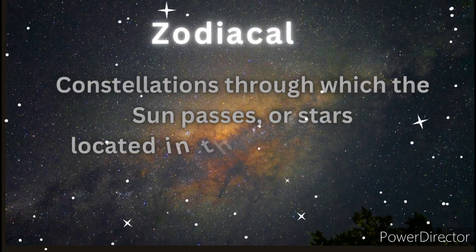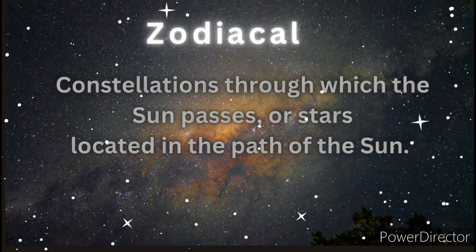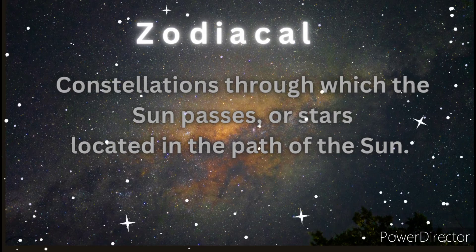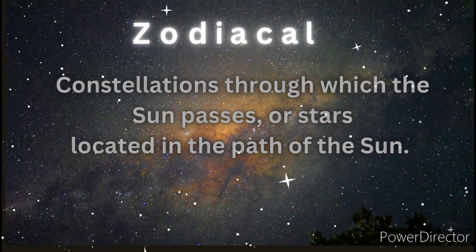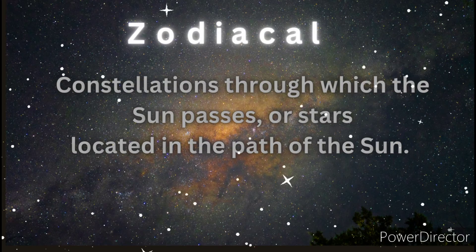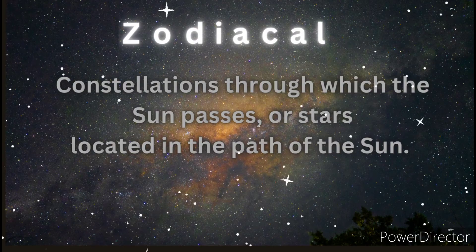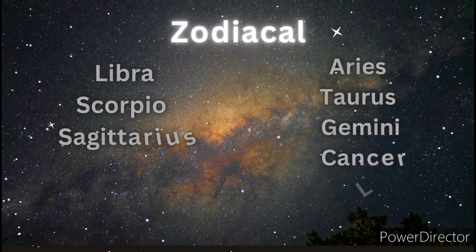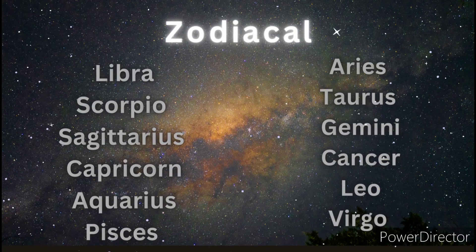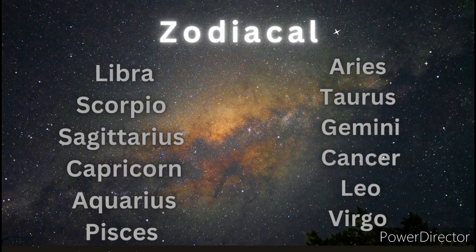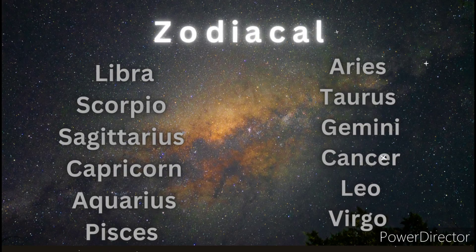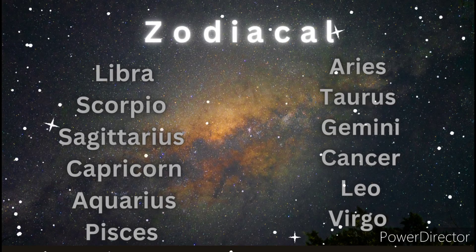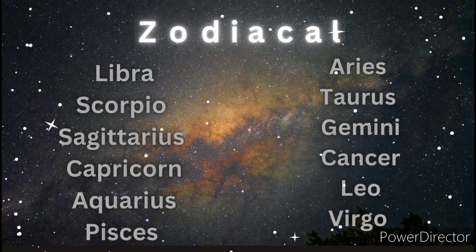The second category is the Zodiac — constellations through which the sun passes, or stars located in the path of the sun. This group of constellations is mainly composed of animals, which is why the ancient Greeks called it the Circle of Animals. These are: Libra, Scorpio, Sagittarius, Capricorn, Aquarius, Pisces, Aries, Taurus, Gemini, Cancer, Leo, and Virgo.